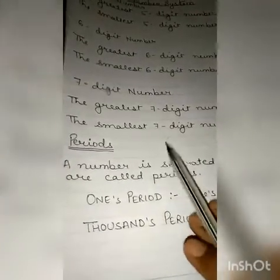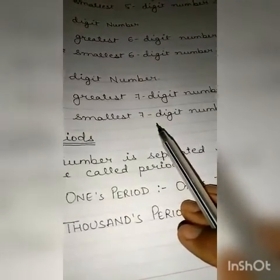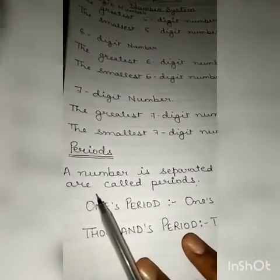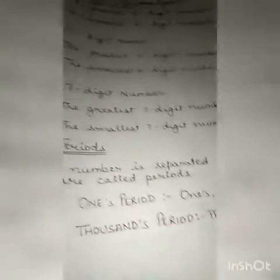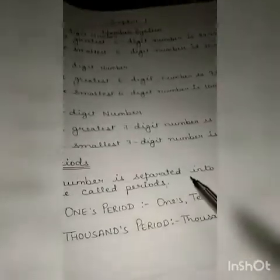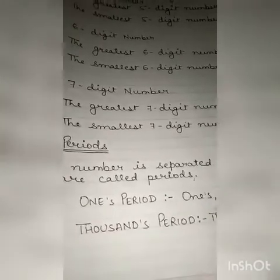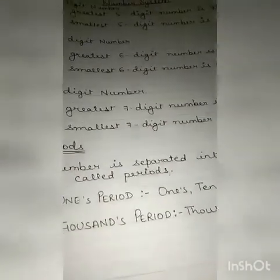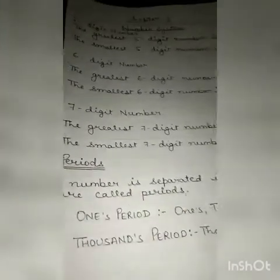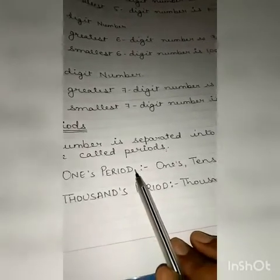After that, the periods come. For solving the number system, you should all know what periods are and according to which period we can distribute the numbers — this is a very important thing. A number is separated into groups called periods. There are two periods: ones period and thousands period. Ones period contains ones, tens, and hundreds. Thousands period contains thousands and ten thousands.